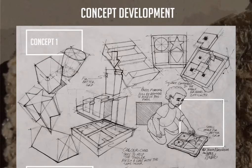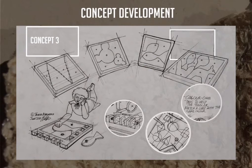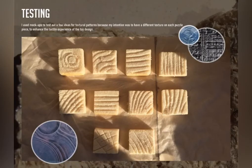Moving on to my ideation phase, I started off with design ideas which were very much on the thick side. This meant more material would be used and since I had chosen casting and press forming as my manufacture method options, these designs would likely take very long to dry. To avoid long lead times, I steered towards ideas with thinner components, and that's how I arrived at my third concept. By borrowing ideas from my first two concepts and combining them with the third, I managed to develop something I was happy with and was ready to take into CAD. Before doing that, I used mock-ups to test out a few ideas for textural patterns, because my intention was to have a different texture on each puzzle piece to enhance the tactile experience of the toy design.